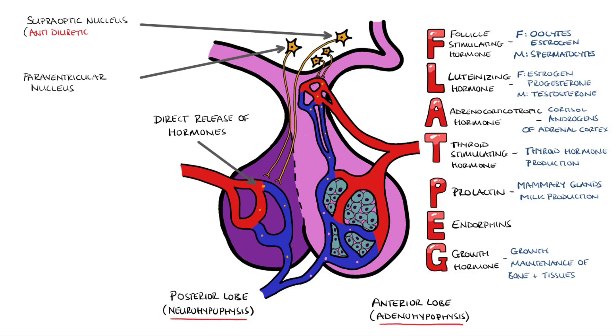The nerve cell bodies in the supraoptic nucleus produce primarily ADH, antidiuretic hormone, also known as vasopressin. This is responsible for absorption of free water at the level of the kidney, and also increases blood pressure via vasoconstriction.